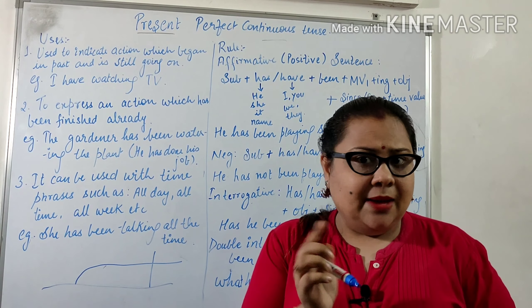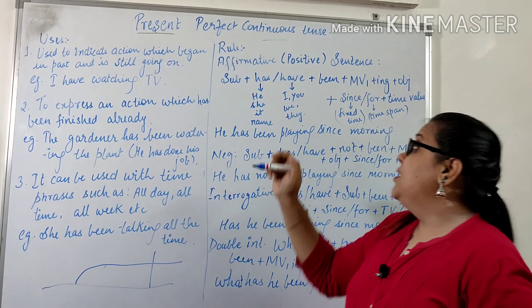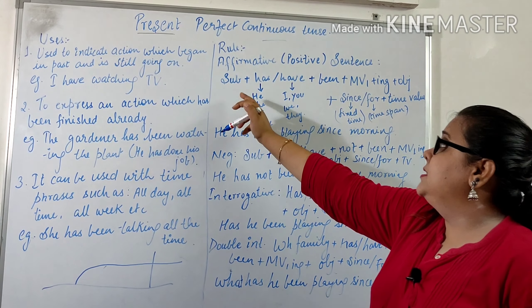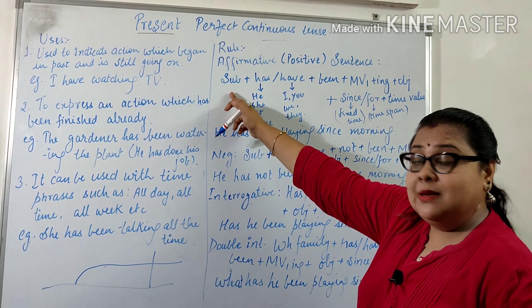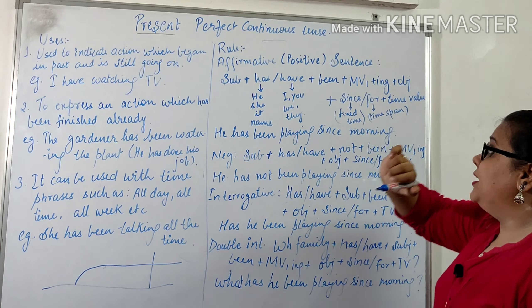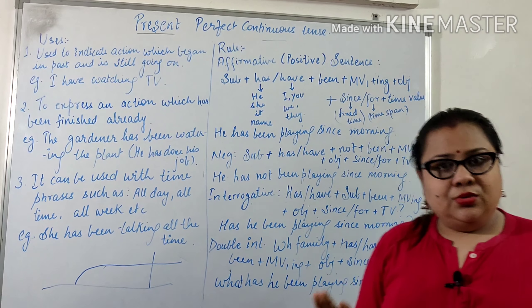Now talking about the rule: for a positive sentence, it goes — Subject + has/have + been + main verb (first form + ing) + object + since/for + time value. Since and for can be omitted, but when used, you need to remember the difference between them.